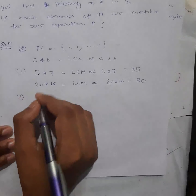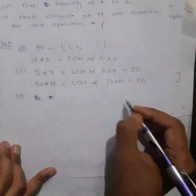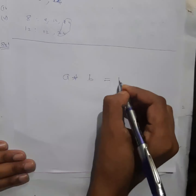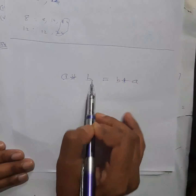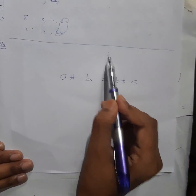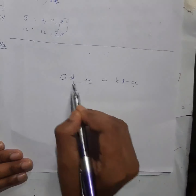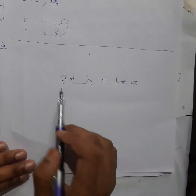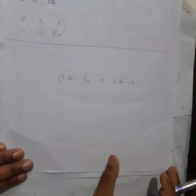Question number 2: is ★ commutative? For commutative, what condition must be satisfied? A★B must be equal to B★A. Meaning: if I do the operation taking A first then B and get some outcome, and if I take B first then A and get the same outcome — then the operation is commutative. Order does not matter. If changing the position does not change the result, it is commutative.